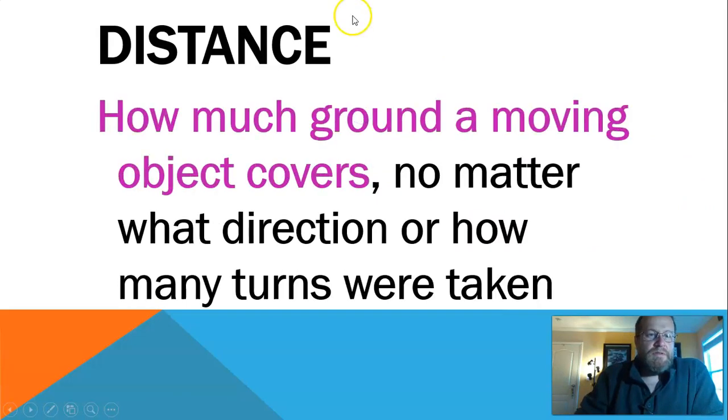Let's define distance and displacement. Distance is how much ground a moving object covers. It doesn't matter what direction it goes, how many turns it takes. An example would be the Indianapolis 500. Those cars go 500 miles in one race. If I remember right, the track is one mile long total, so they go 500 times around the track. Pretty fast speeds. They cover a huge amount of distance. They don't go anywhere, but they cover a huge amount of distance. Does that make sense?